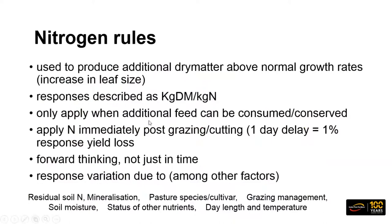When we're thinking about nitrogen, it has to be forward planning. There's no use thinking we're out of feed now and need to get some nitrogen on. If we're calving cows at the moment, we should have been thinking six weeks ago about getting nitrogen on to get maximum response. Similarly, if we're looking at silage in the next few months, we've got to be locking it up and allowing at least four weeks to get that nitrogen response through.